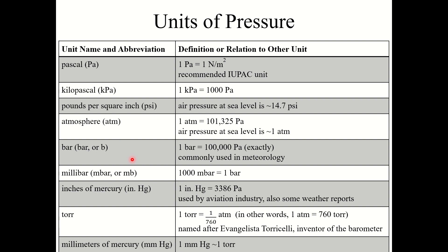Sometimes you'll see bars and millibars used, especially in meteorology. Sometimes you'll see inches of mercury or centimeters of mercury — if you look up the pressure on weather.com in Raleigh right now, you might see those units, which are also used by the aviation industry. The third and fourth most common units in this chapter are Torr and millimeters of mercury (mmHg).